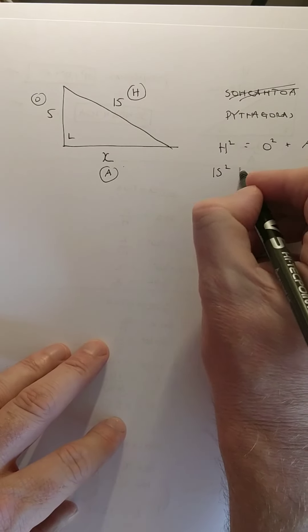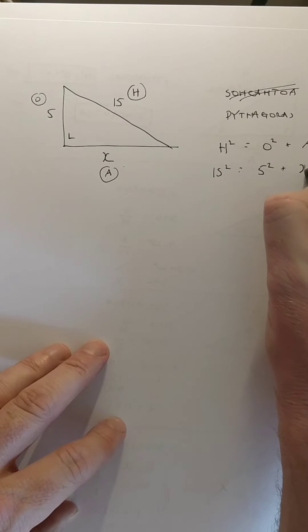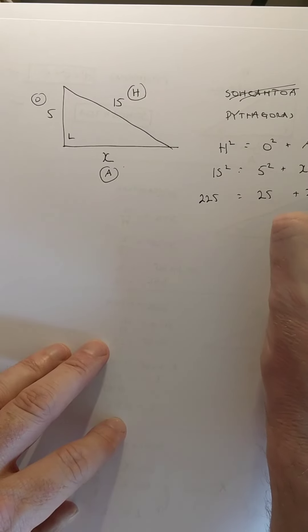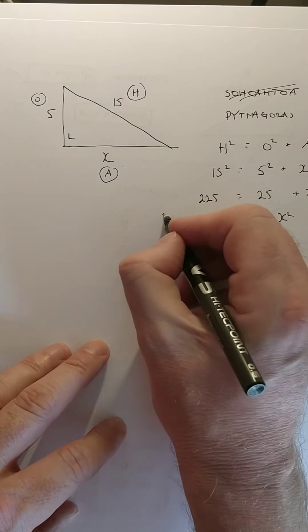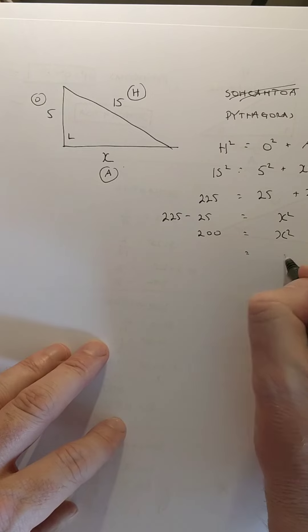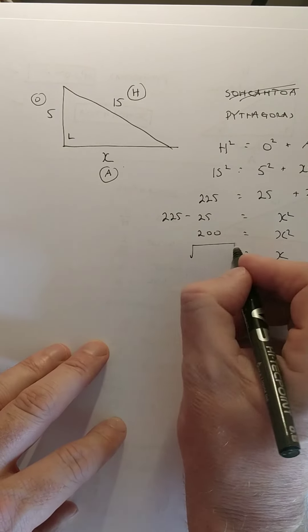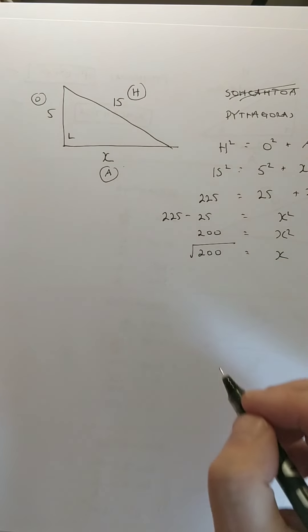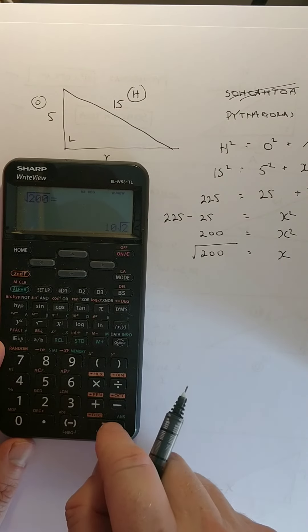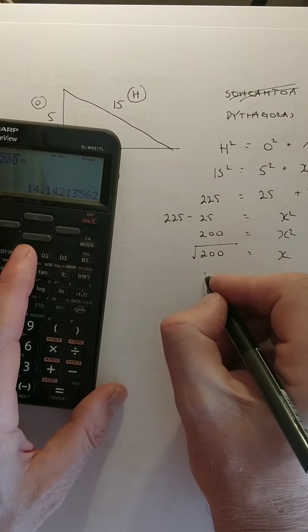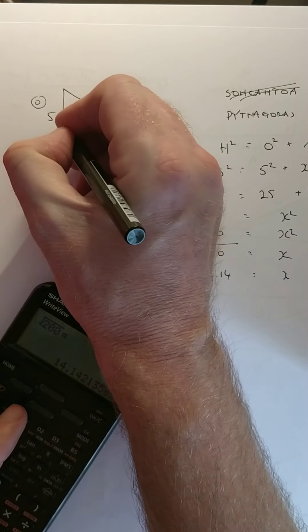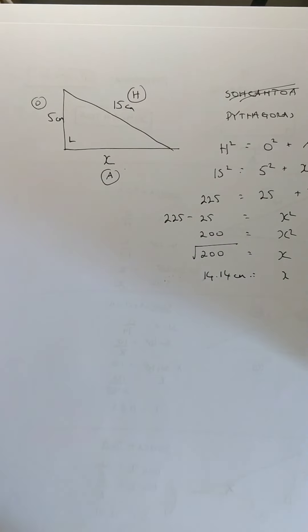So, Mr. Pythagoras, remember, is the long side squared equals the two short sides squared. So, we can still call this H. We don't know which one of these is O and A. But it doesn't matter. It never matters. You can name either of them. So, we're going to fill it in. 15 squared equals 5 squared plus X squared. So, this is 225 equals 25 plus X squared. We need to get X squared on its own. So, we have to move the 25. Now, remember, the inverse of squaring is square rooting. So, we square root X squared to get X, and we must square root over here too. We got ourselves an answer. And we need to do two decimal places. And we're getting 14.14.